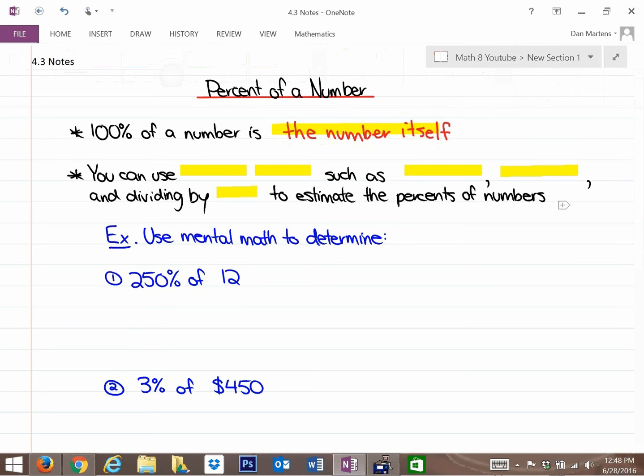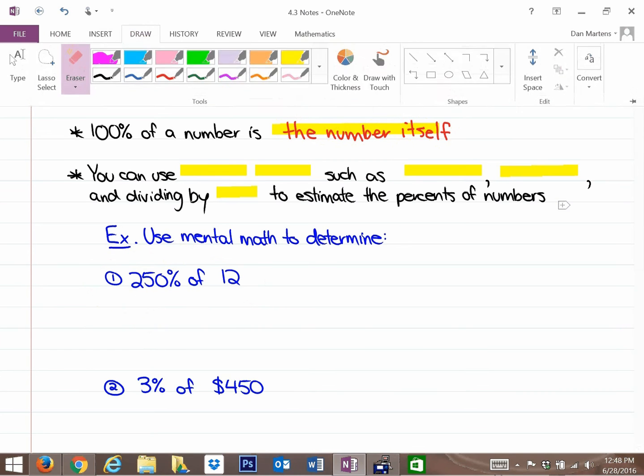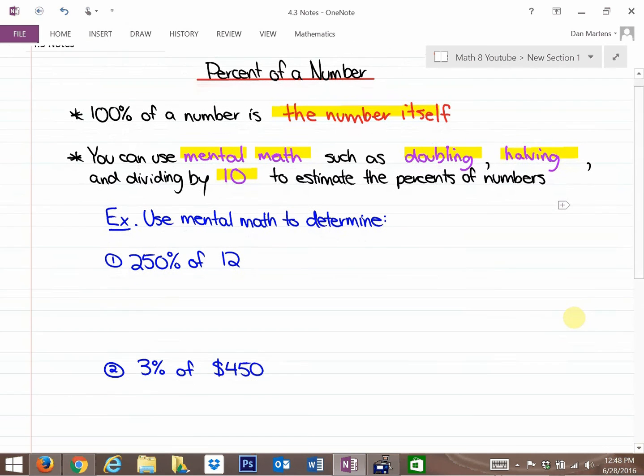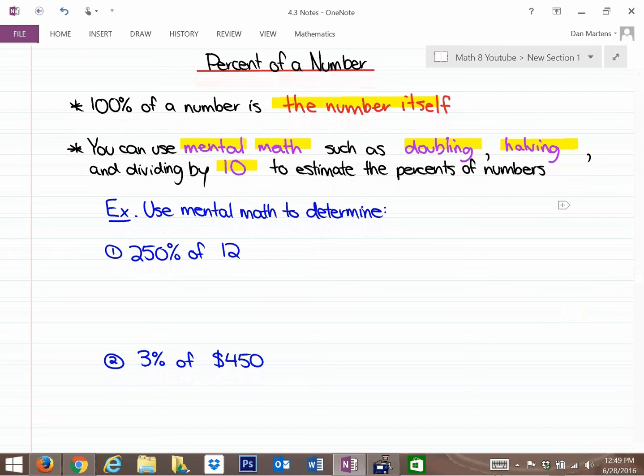What we're going to be doing is investigating questions like this that I have circled in red: determining what's 250% of 12, or what's something other than 100% of a number. But if we understand the 100% of a number concept, this will be much easier to reason with. We can use mental math, and you'll come up with your own methods in your brain, such as doubling, such as halving, and such as dividing by 10 to estimate the percents of numbers. We're going to look at two examples right now, and we're not even going to use a calculator.